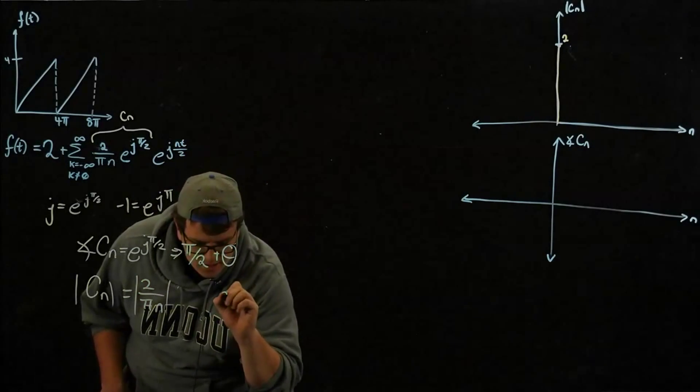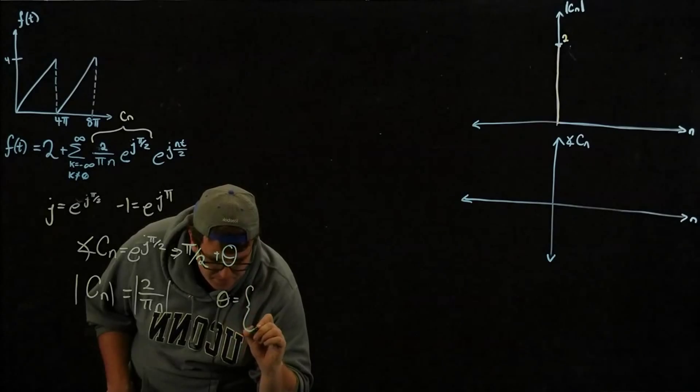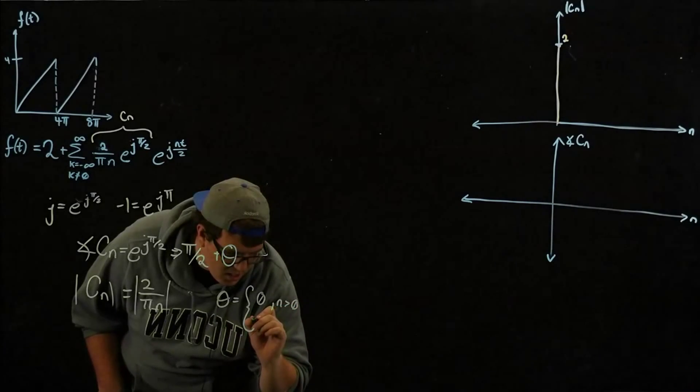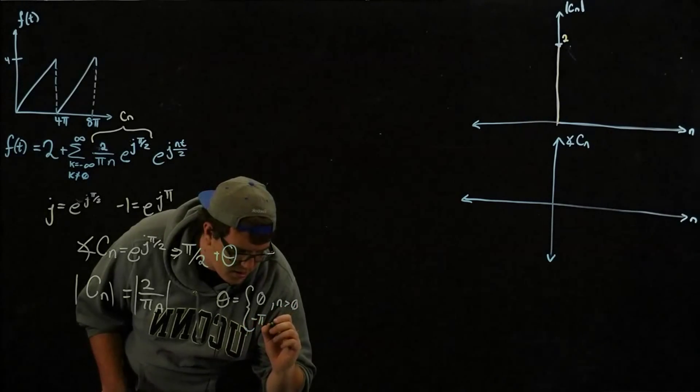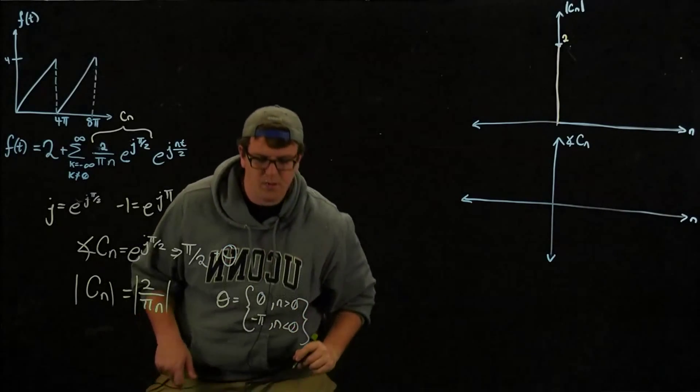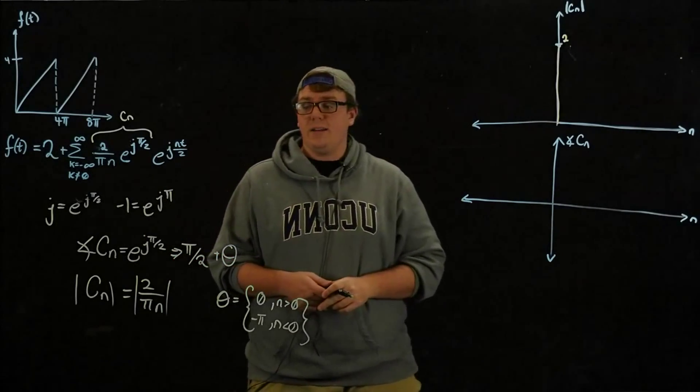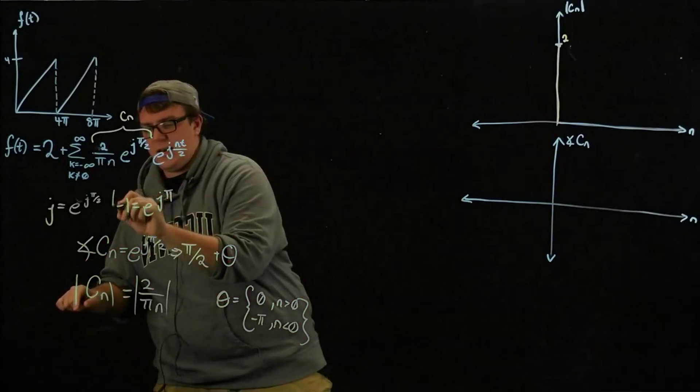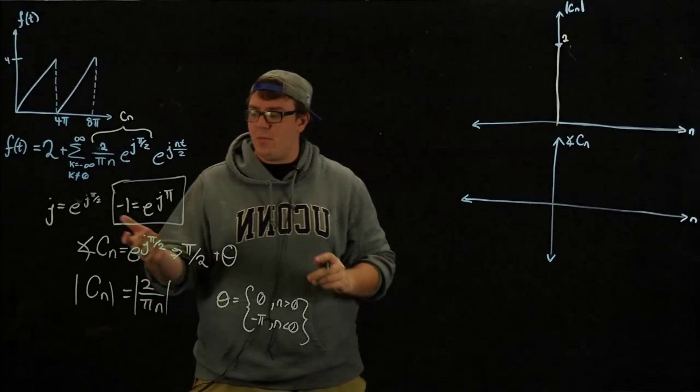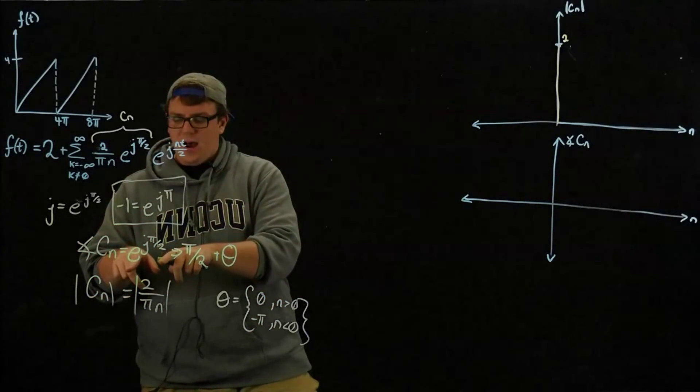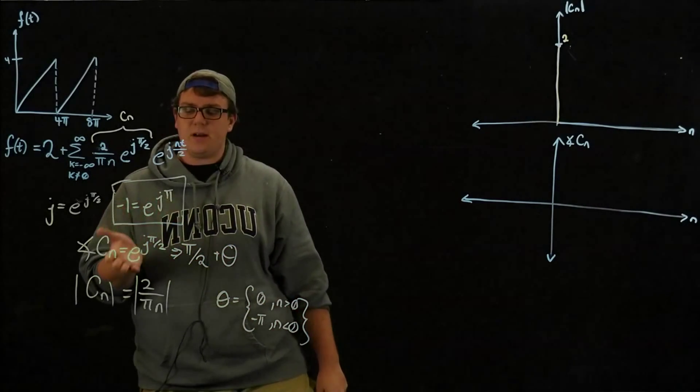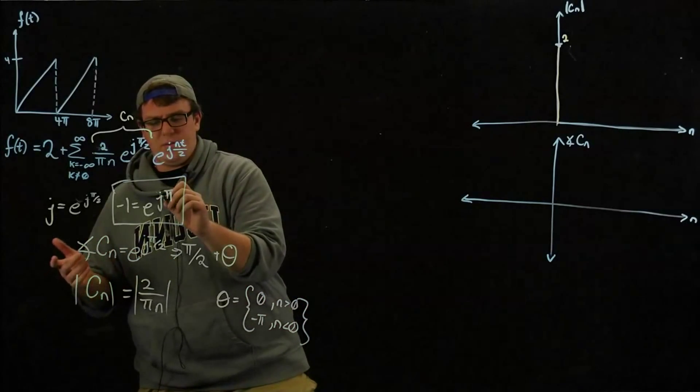Theta here, theta is going to equal to 0 when N is greater than 0, and negative pi for N less than 0. And the reason for that being that because negative 1 is equal to e to the j pi. So we introduce that pi when you multiply things together that are in the e-function. So we would have e to the j pi over 2 times e to the j pi.